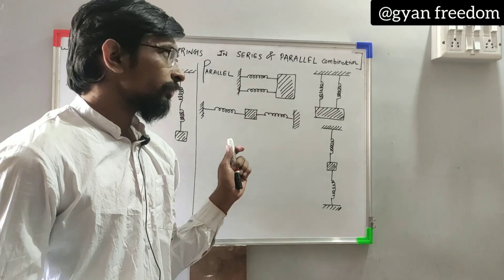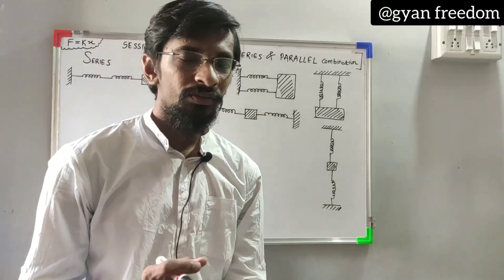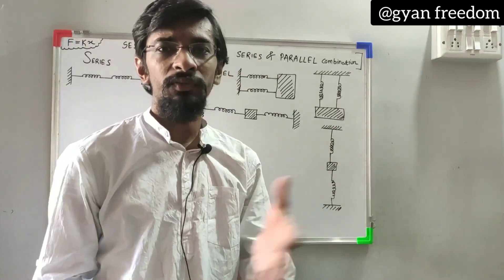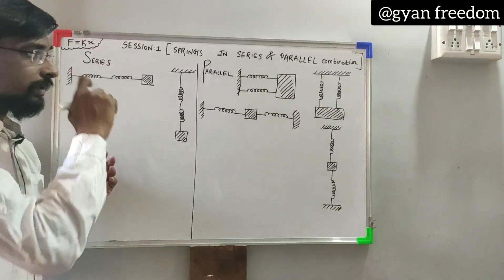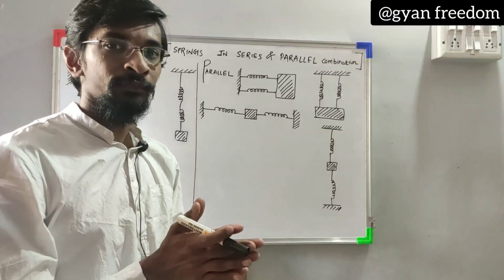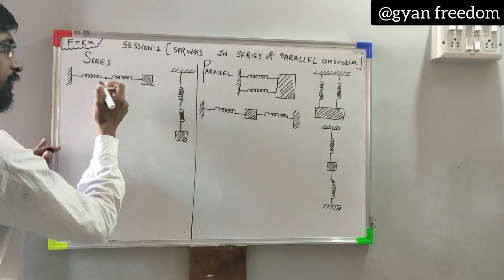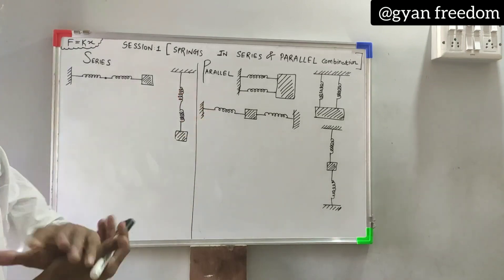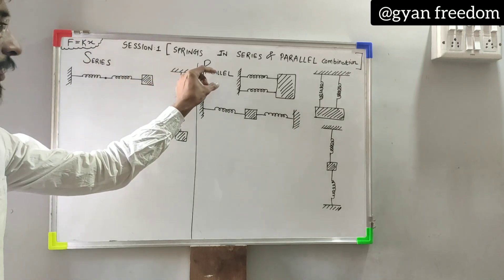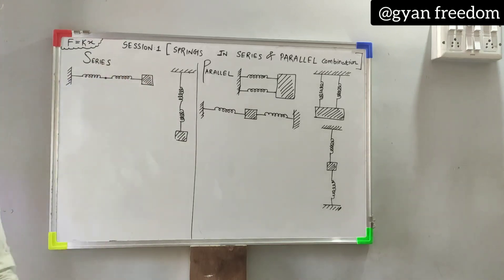Hello everyone. We have discussed the spring-block system separately, where we have one spring and one block — we can compress it, pull it out, and oscillation happens. We know the equation and many things. Now let's think about the combination when you have two or more than two springs. They can be connected with each other, where a block of some mass lies on the horizontal plane and you can push or pull it, causing the system to oscillate.